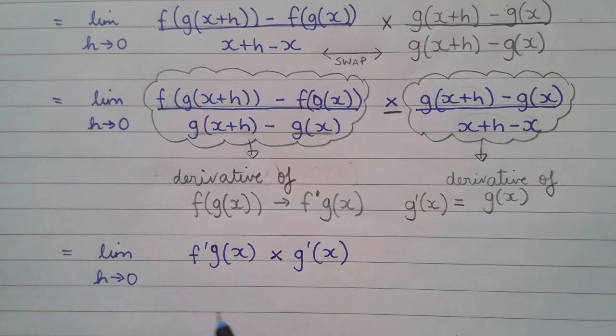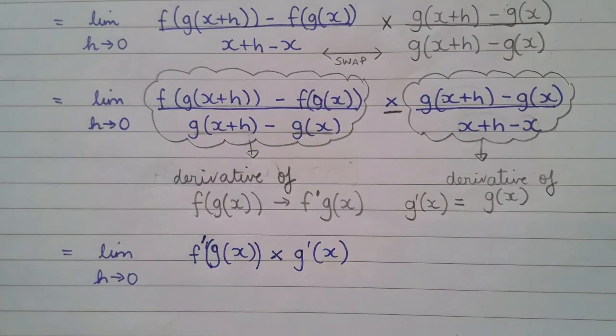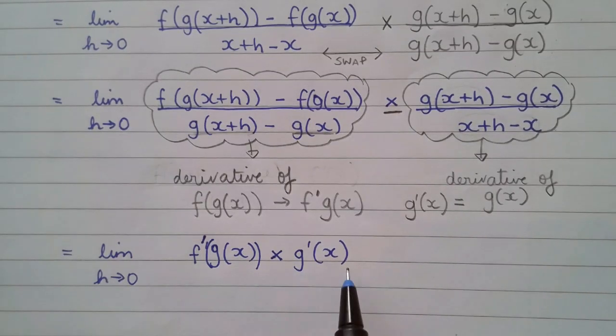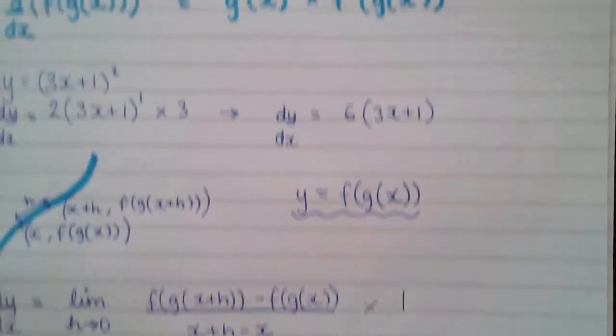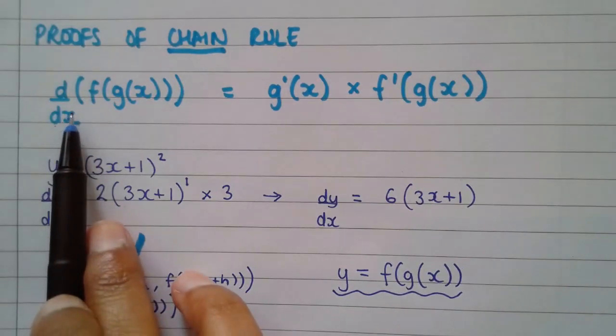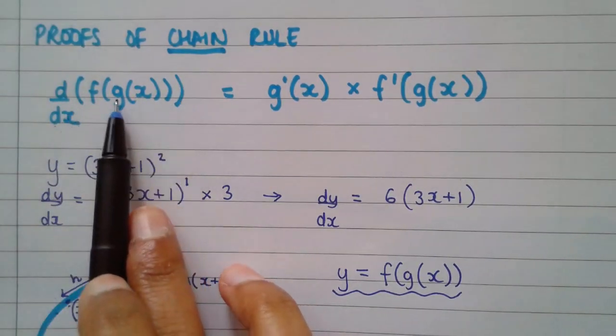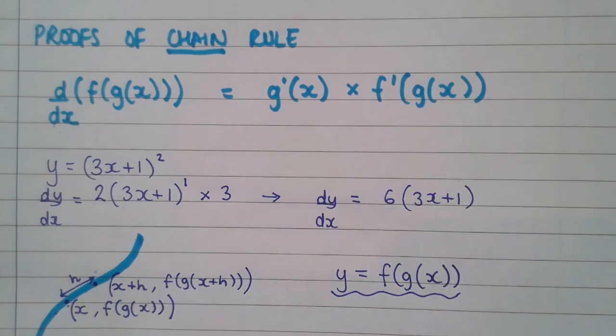If we go back to the top, that is what we were trying to prove. We were trying to prove that the derivative of a function within another function is this expression here. And after doing that long proof, we've come to the conclusion that yes, indeed, that is what's true. And therefore, that's our first proof for chain rule.